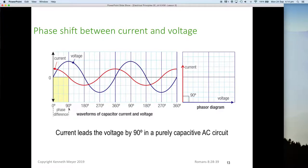So the big thing you need to get from this slide is in a purely capacitive circuit, and most capacitors are pretty pure by the way, we get this 90 degrees phase shift between current and voltage. So the current leads the voltage by 90 degrees in a purely capacitive AC circuit.